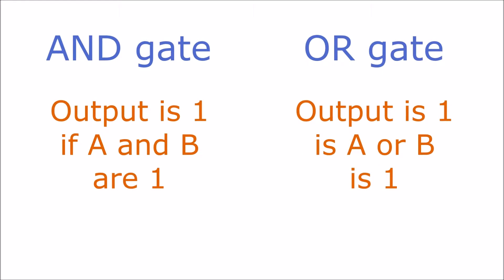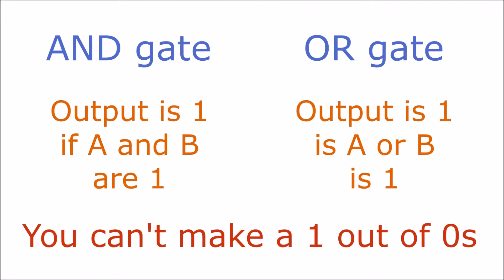If you look at the definitions of AND and OR gates, they are both defined in terms of how input values of one can combine to create an output of one. If both inputs are zero the output will definitely be zero. With positive logic you can't make a one out of zeros.